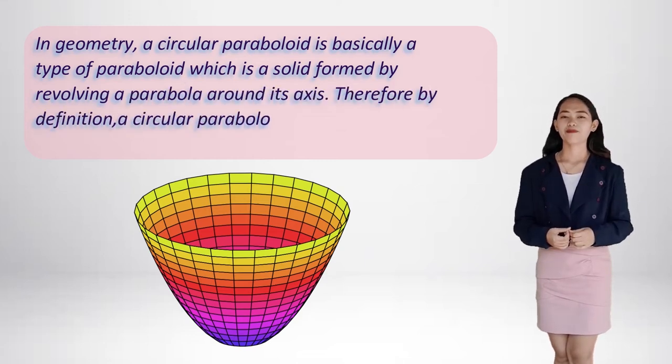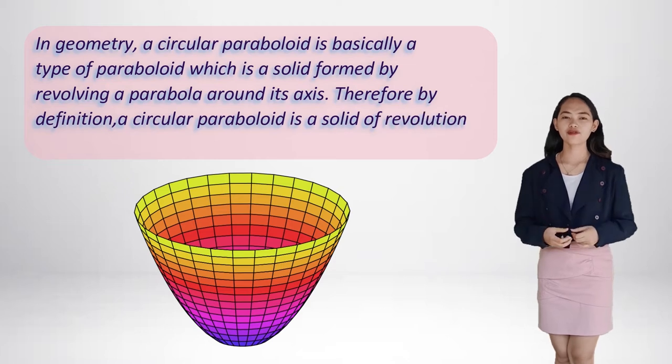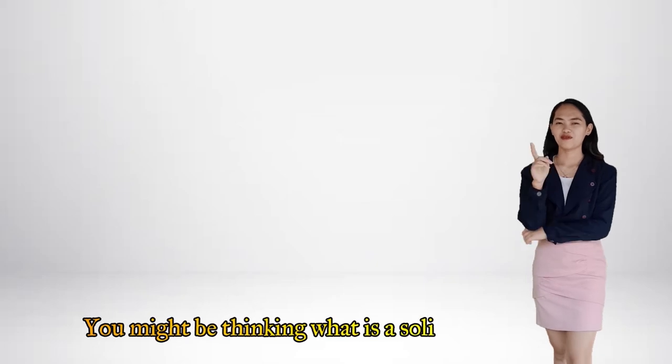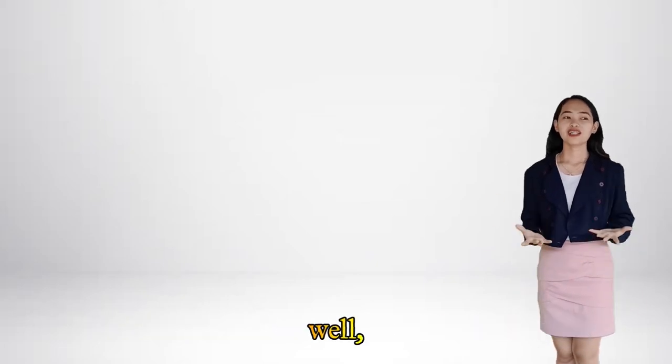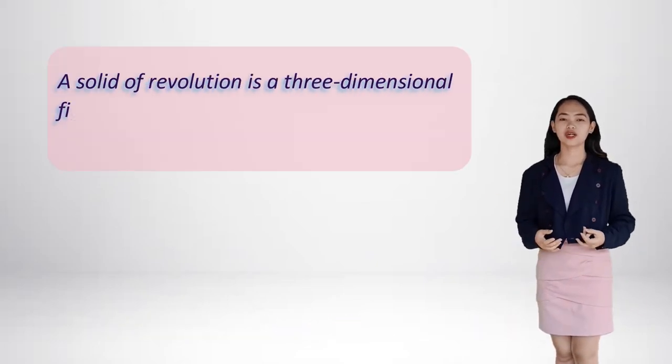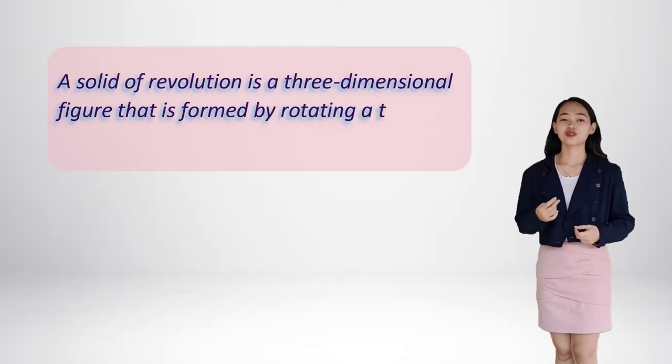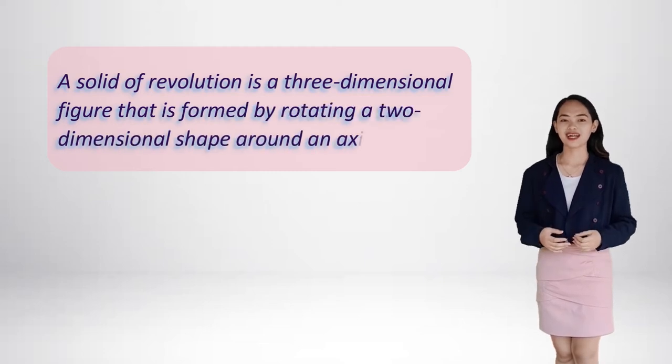You might be thinking what is a solid of revolution? Well, a solid of revolution is a three-dimensional figure that is formed by rotating a two-dimensional shape around an axis.